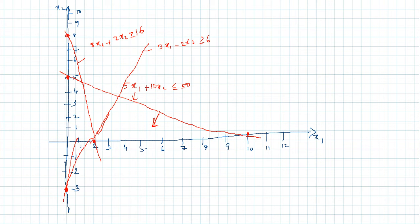To confirm, if we take point (1, 2) on the second line: 8 + 4 = 12, which is not ≥ 16, so that is not a feasible region. Anywhere above the second line is the feasible region, so we mark the upper side as feasible.